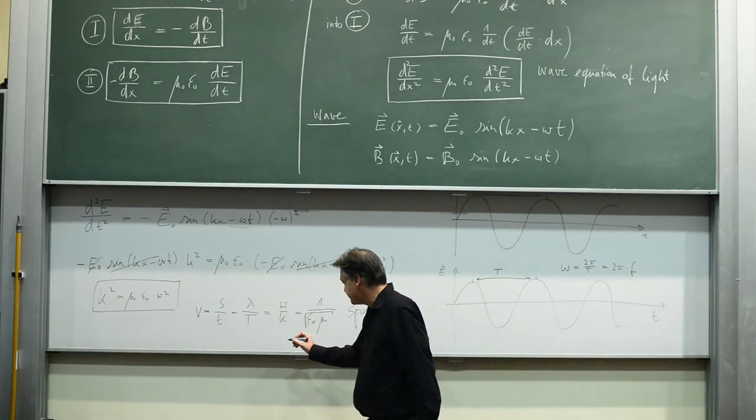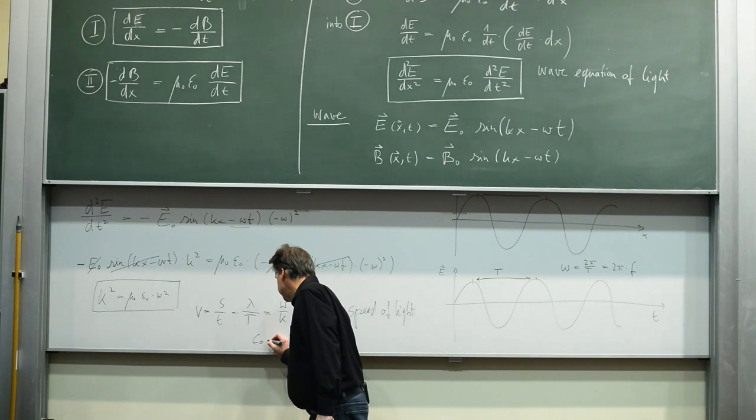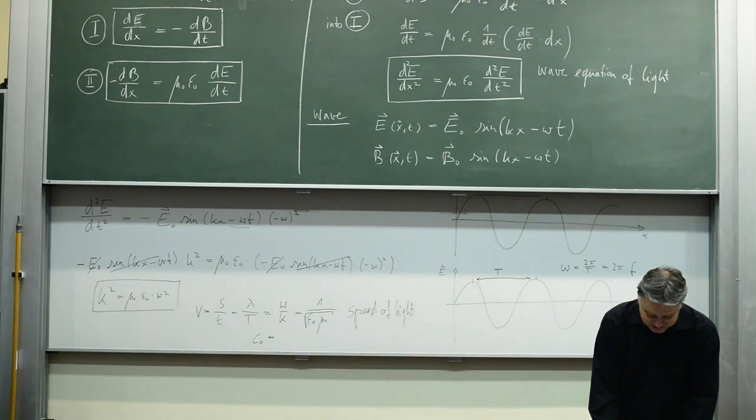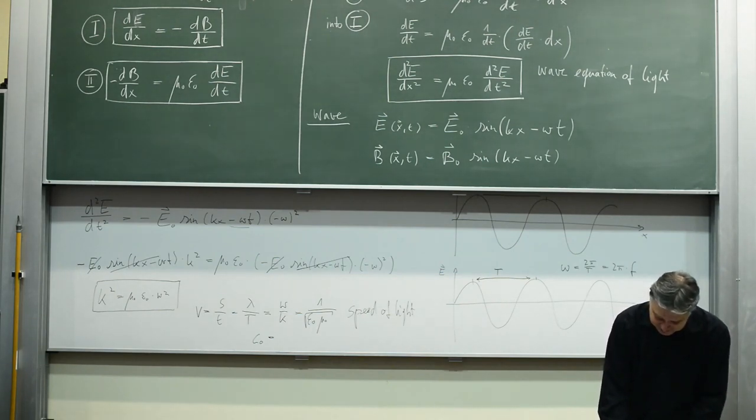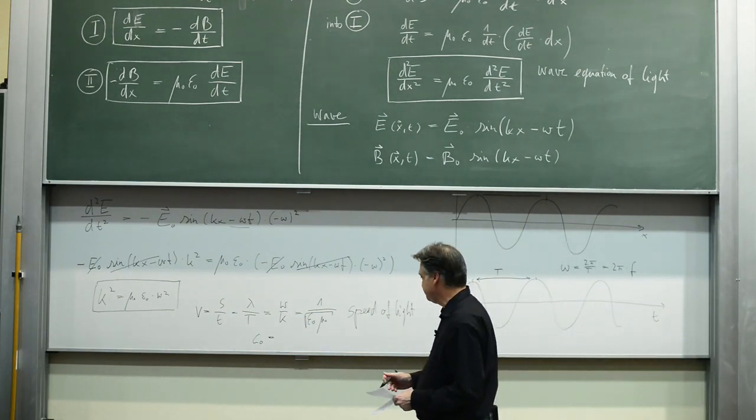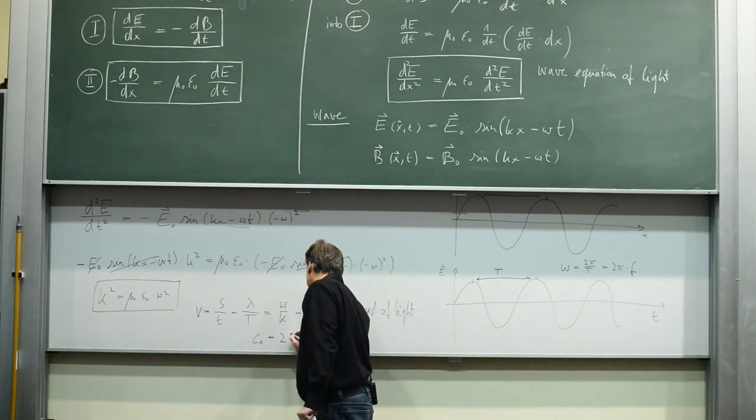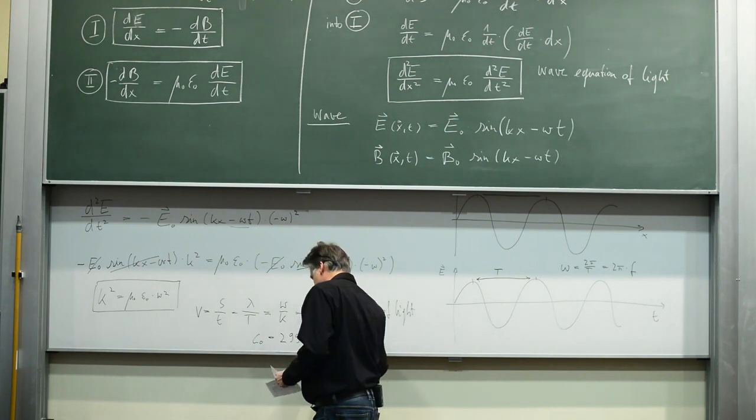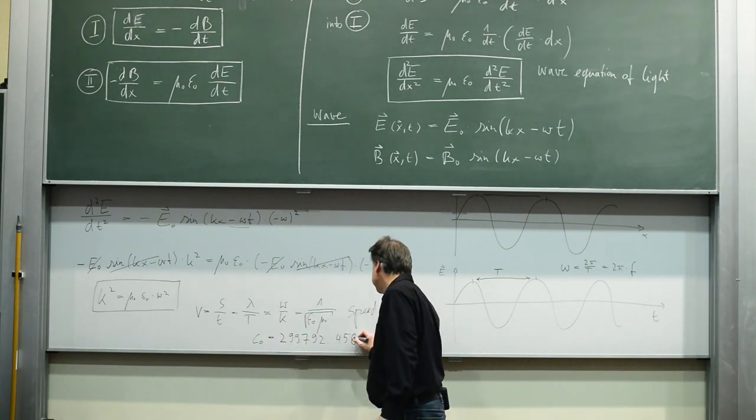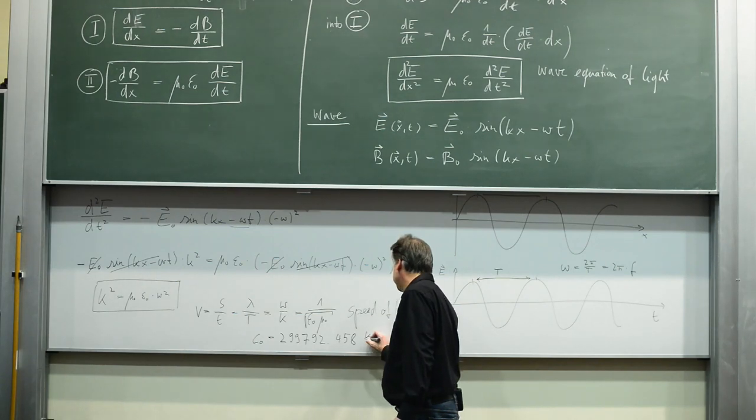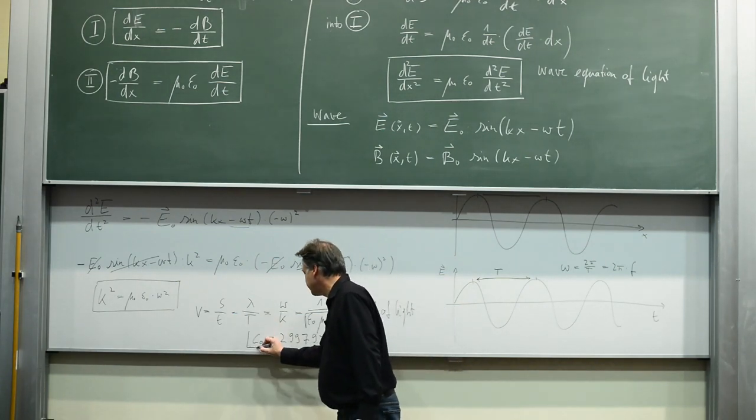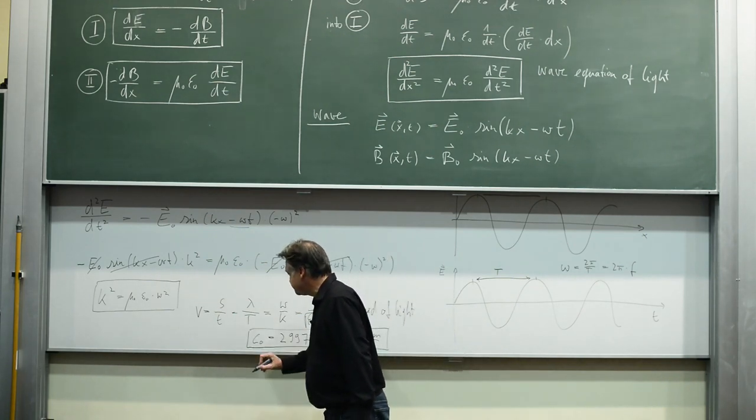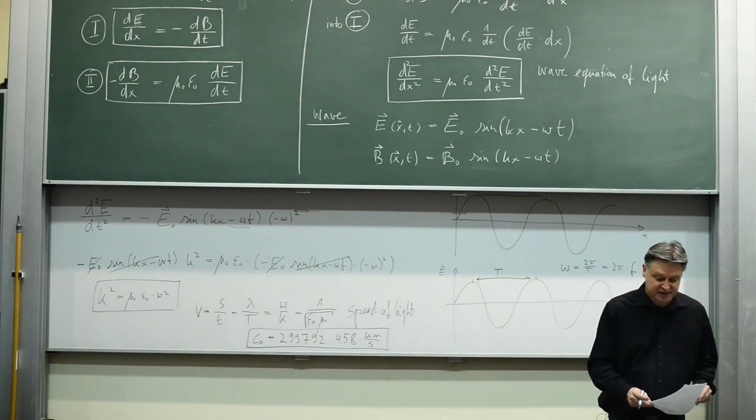Let me just add the value here. C0 is 299,792.458 kilometers per second. That's where I would like to stop my brief summary of the last week's lecture.